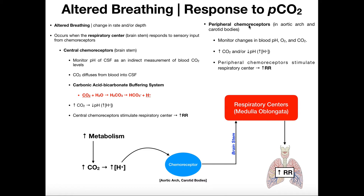There are two kinds of chemoreceptors that monitor CO2 levels: central chemoreceptors and peripheral chemoreceptors. Central chemoreceptors are located in the brain stem, specifically the medulla oblongata, and they monitor the pH of cerebrospinal fluid. They're monitoring pH directly, not CO2 levels. However, if the pH is low, that means elevated hydrogen ions — because pH is a negative scale, so low pH means high hydrogen ions. And high hydrogen ions means high CO2. So central chemoreceptors use pH as an indirect measure of blood CO2. That CO2 is able to diffuse from the blood into the cerebrospinal fluid, and that's how the central chemoreceptors detect H+ levels.